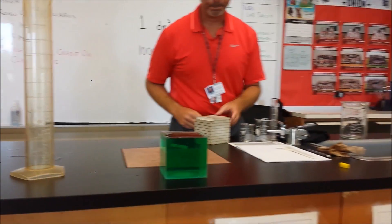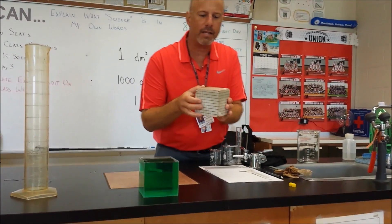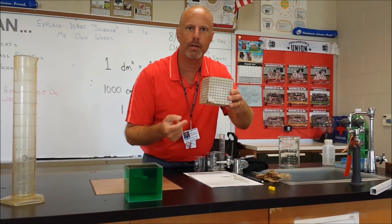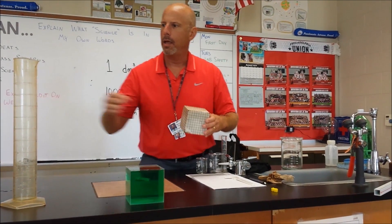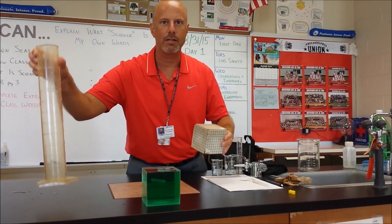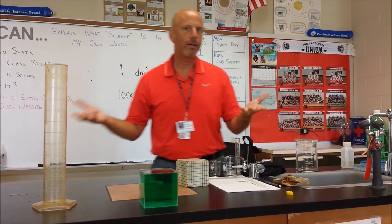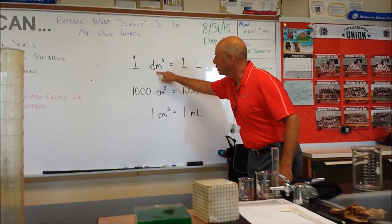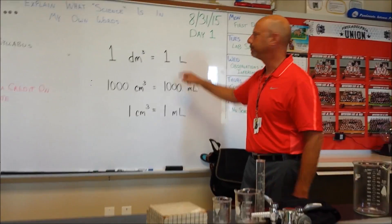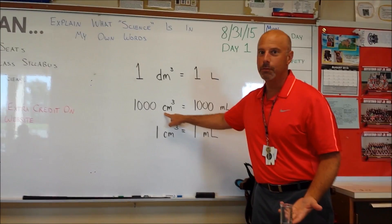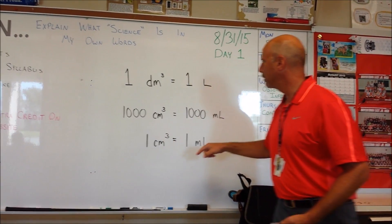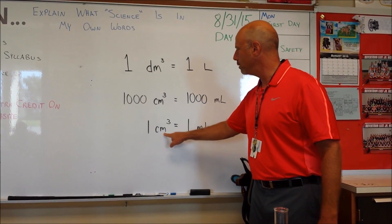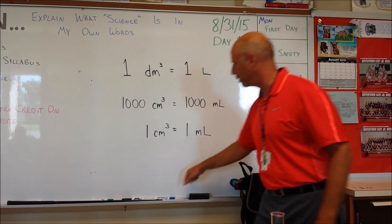Moreover, since a cubic decimeter is 10 centimeters by 10 centimeters by 10 centimeters, or 1,000 cubic centimeters, and a liter is 1,000 milliliters, we can see that one cubic decimeter is equal to one liter, and 1,000 cubic centimeters is equal to 1,000 milliliters. Therefore, one cubic centimeter is exactly equal to one milliliter.